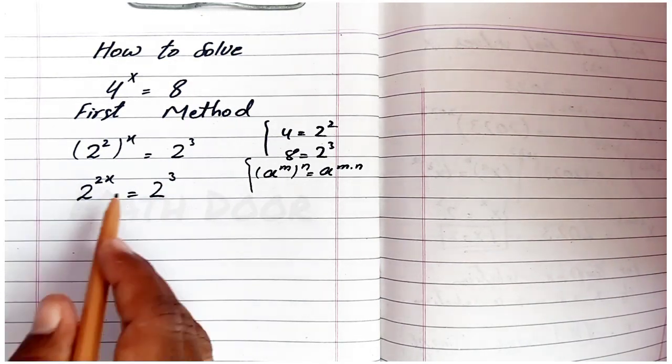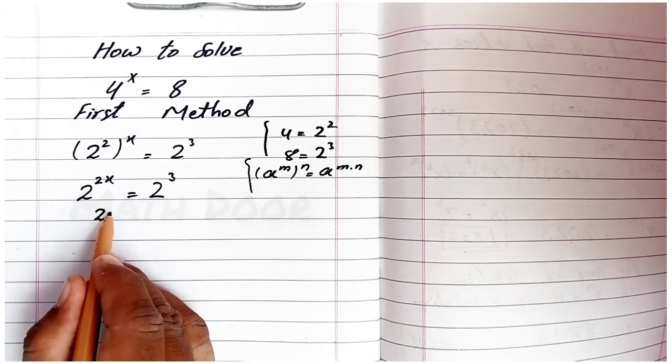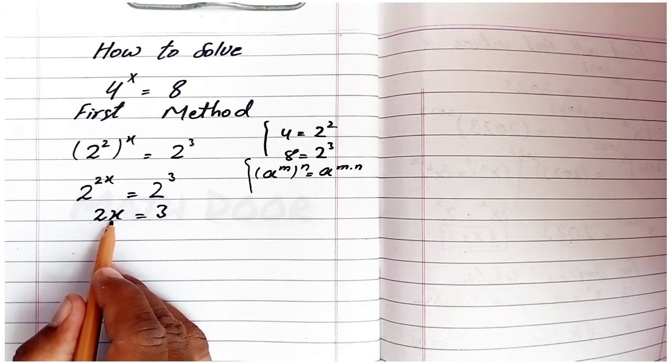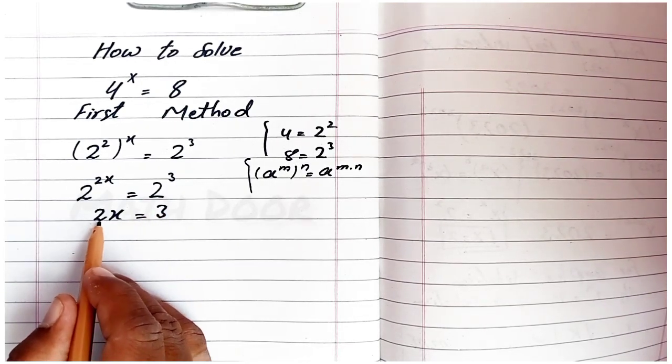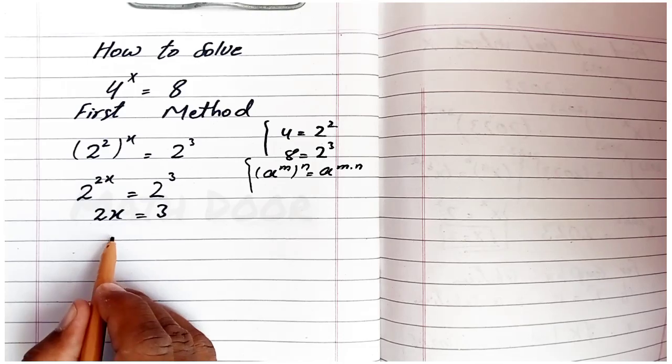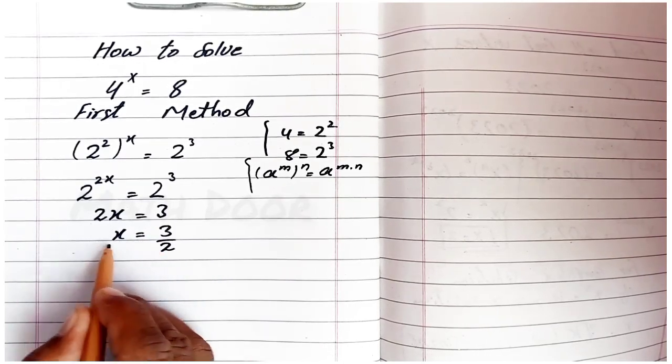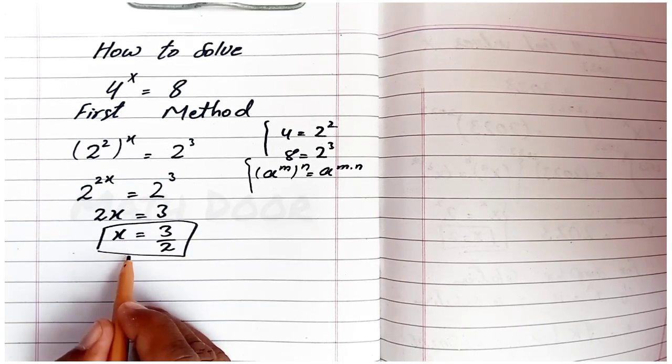If the base is the same, the powers are equal. So 2x = 3. To find x, take 2 to the right side of the equation, and x = 3 over 2. This is the value of x.